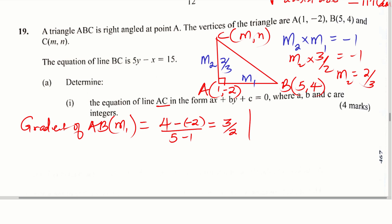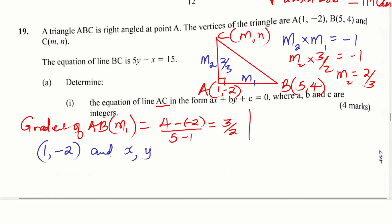Now for AC, we have one point on that line and we have the gradient. Point of correction: the gradient of AC is negative 2 thirds, not positive 2 thirds. Since gradient of AB is 3 over 2, when you apply M1 times M2 equals negative 1, you should get gradient of AC as negative 2 thirds.